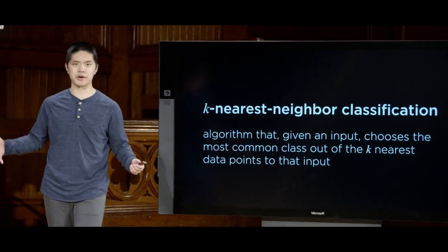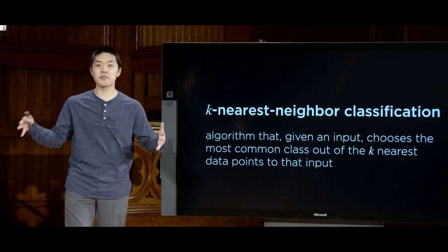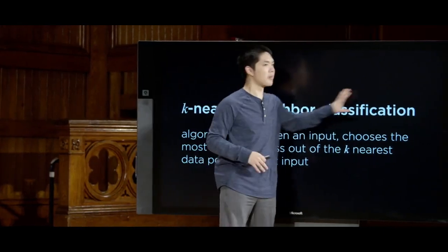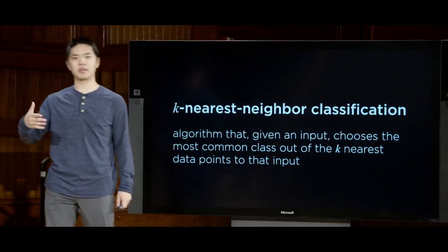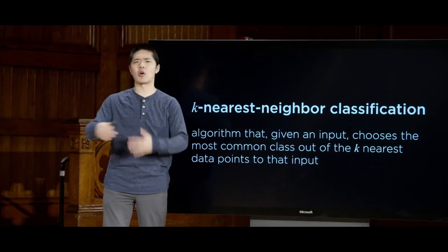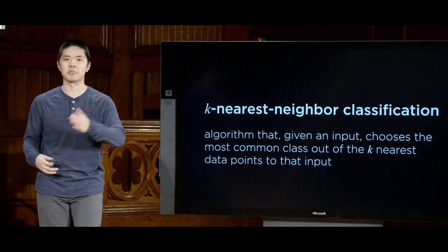K-nearest neighbor classification is fairly straightforward to understand intuitively — you just look at the neighbors and figure out what the answer might be, and it can work very well for a whole variety of classification problems. Not every model is going to work under every situation. There are a number of different approaches and algorithms we can apply, all solving some kind of classification problem. No one algorithm is necessarily always going to be better than another — they each have trade-offs. A lot of machine learning research is about trying multiple different algorithms to see what gives you the best results.